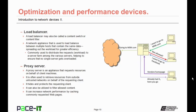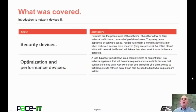Then there's the proxy server. A proxy server is an appliance that requests resources on behalf of a client machine. It's often used to retrieve resources from outside untrusted networks on behalf of the requesting client. It hides and protects that requesting client from the outside untrusted network. It can also be utilized to filter allowed content back into the trusted network, and can increase network performance by caching or saving commonly requested web pages. That concludes this session on Introduction to Network Devices, Part 2.